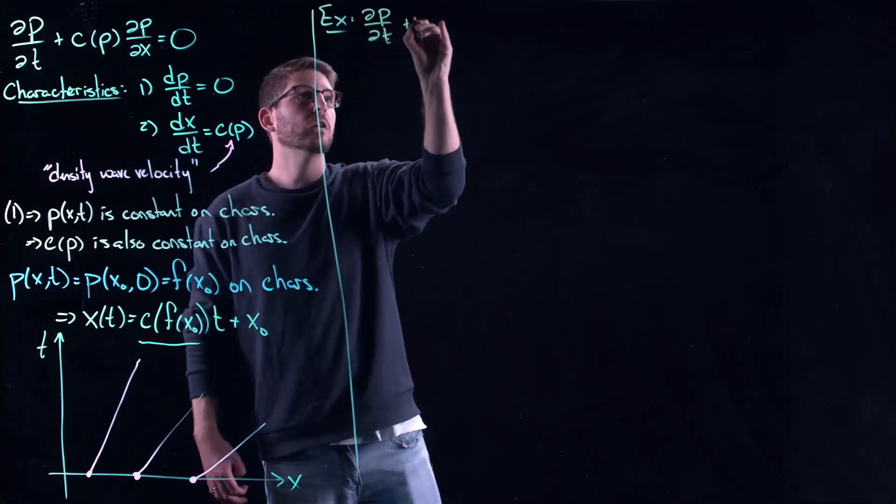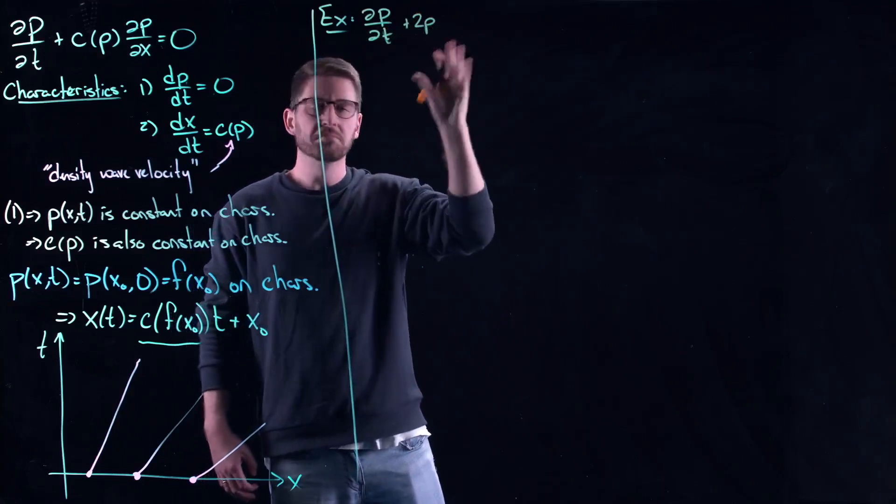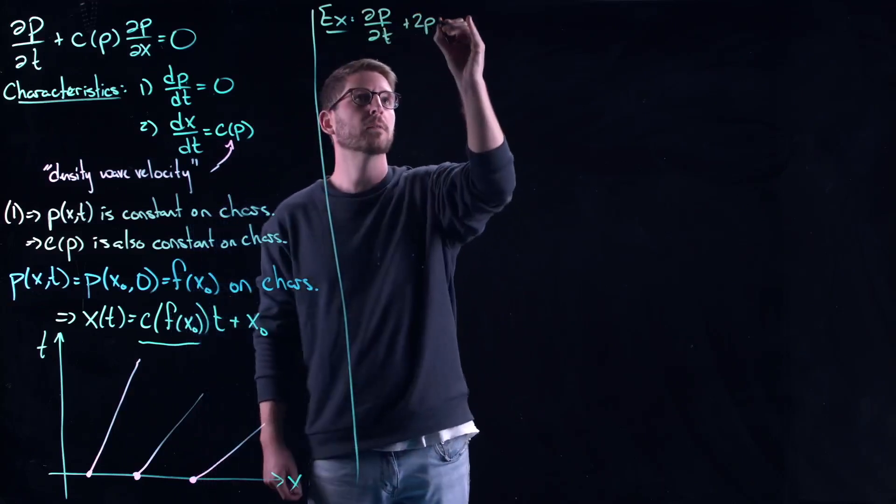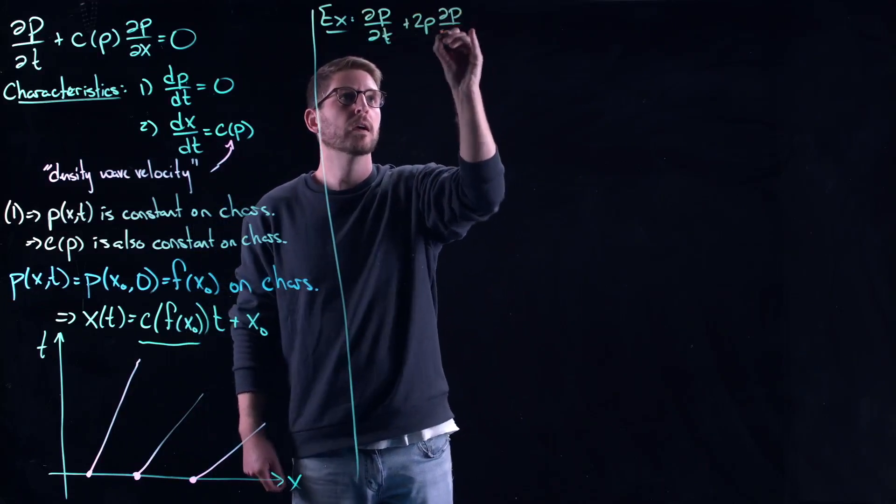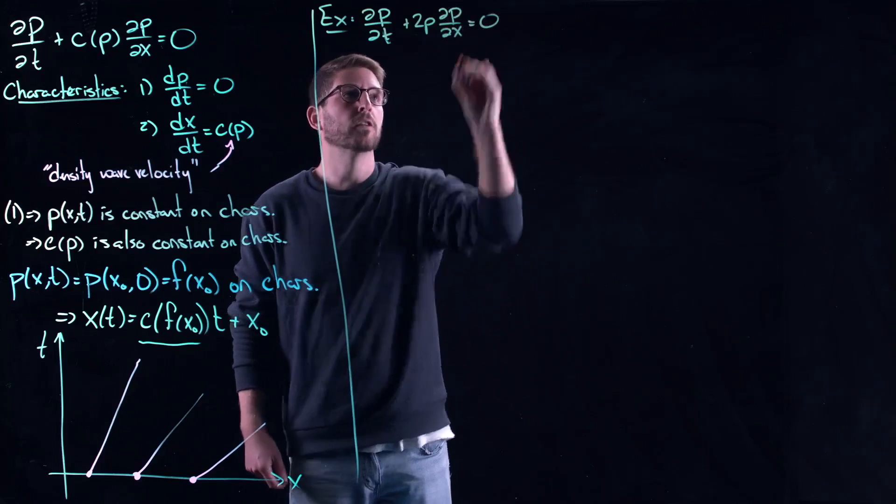Let's just say c is equal to 2ρ. Just a fun, simple, little, easy one. And we'll see what this means for traffic flow in a moment.